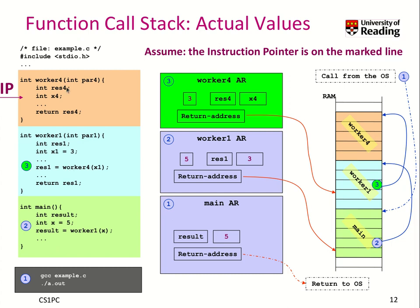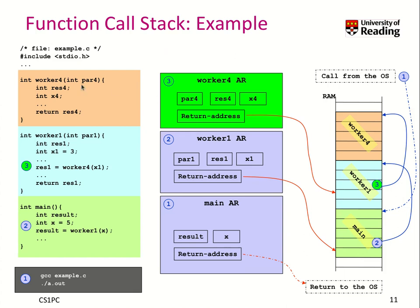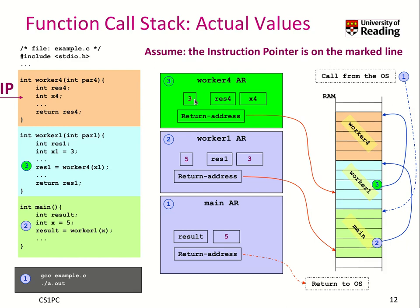Likewise, when you call worker 4, now with x1, well, this par 4 variable, which is this argument here for worker 4, has been set to the actual value, which is 3. We don't know anything yet about res 4, x4, res 1, and the result. So all of them are basically undefined.